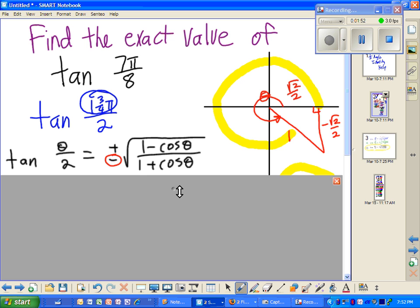Now, we have our identity, and I'm going to choose the negative of the choices, plus or minus. You always got to decide which is it, the plus or the minus. And I know it's negative because tangent of 7π over 8, tangent in the second quadrant, if you take a look at an angle in the second quadrant, which is just before π,